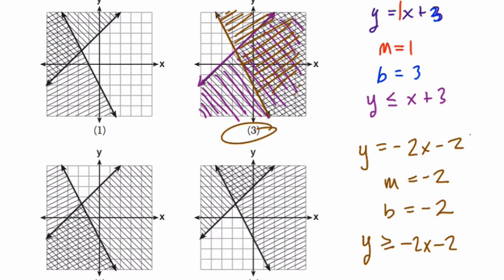If they ask you for a solution set of these inequalities, it's where the two shaded regions cross. In this case, everything in here. So if they ask you for a solution set, it's any point where these two shaded regions cross each other. All right, I hope this helped.